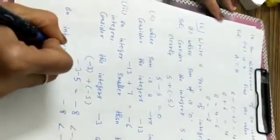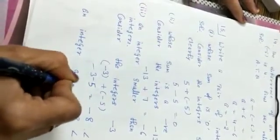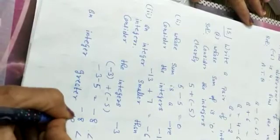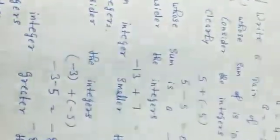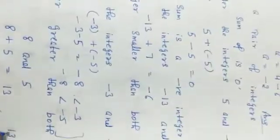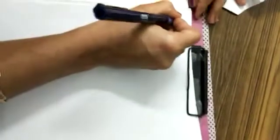Part four: a pair of integers whose sum is an integer greater than both integers. Consider 8 and 5: 8 + 5 = 13. Since 13 is greater than 8 and 13 is greater than 5, the condition is satisfied.